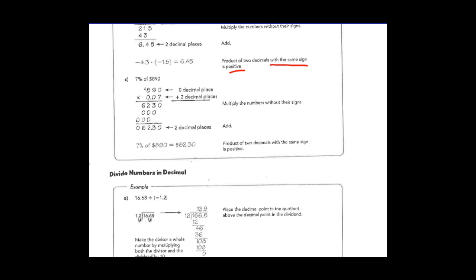Example C should look familiar from our percent unit — how to find a percent of a number. You must change the percent to a decimal, because percent means out of a hundred: seven percent equals seven hundredths. To find seven percent of $890, multiply — 'of' means multiply. Eight hundred and ninety dollars times seven hundredths gives you sixty-two dollars and thirty cents. Notice the dollar sign on that answer, and since both are positive rational numbers, the answer is positive.